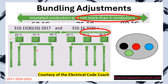Let's imagine that we have a piece of conduit and we pulled in a black, red, blue, and an equipment grounding conductor. What this table is saying is that those ampacity values are true as long as you have not more than three current carrying conductors in a cable, pipe, or raceway. If you do have more than that, then we have to do what's called a bundling adjustment.